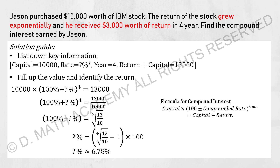That's it for the percentage topic. Key things to remember: for simple interest, take capital multiplied by years multiplied by rate of return — the result is the interest earned or return from the investment. For compound interest, when you take capital multiplied by the percentage to the power of years, the result is the value of the investment. To find the exact interest earned, remember to take the value of investment minus the capital. That will identify the interest earned or loss.